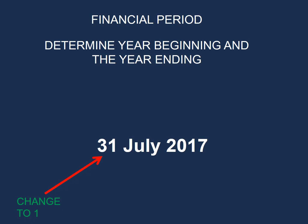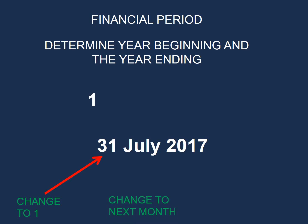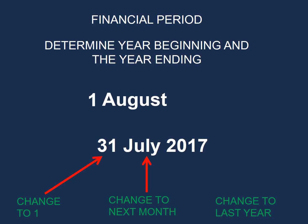The first element is the day of the month — we change that to 1, so 31 becomes 1. The second element is the month, which we change to the next month. The next month after July is August. The third element is the year — we change it from the current year to the previous year, so 2017 becomes 2016.